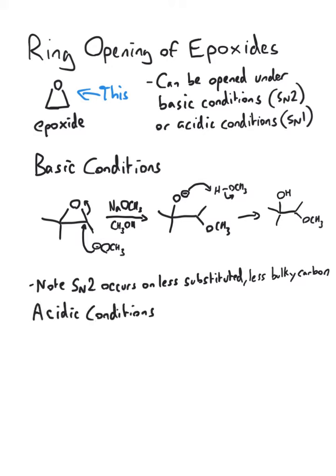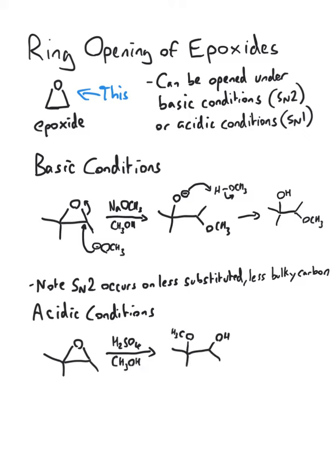Now let's look at the acidic conditions. If we were to open the same epoxide with sulfuric acid and methanol, we would obtain this product. Notice the difference in regioselectivity? Let's look at this in more detail.